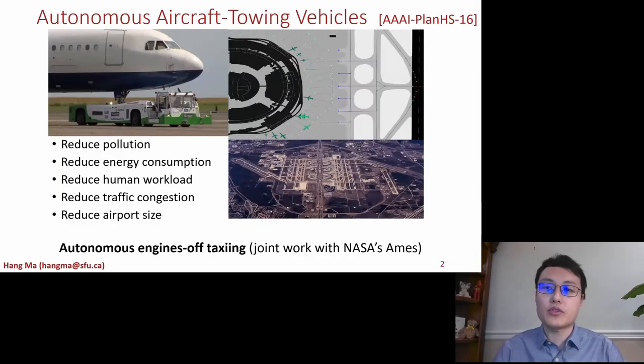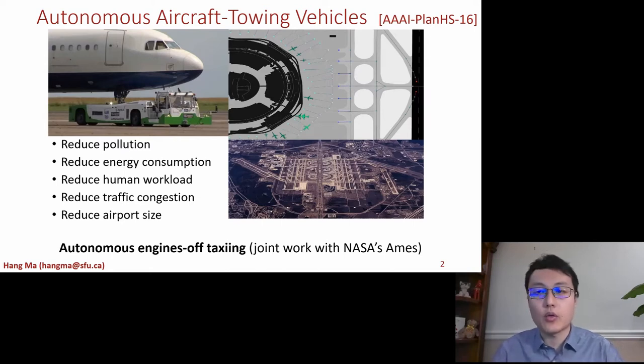So let's first look at our recent Blue Sky project jointly with NASA's aims where we are looking at deploying hundreds of autonomous aircraft towing vehicles in the near future at the Dallas-Fort Worth airport. Here, after an airplane has landed on the runway, we need to assign the airplane to an autonomous vehicle to tow the airplane all the way from its runway to its assigned terminal gate and vice versa from the gate to the runways for takeoff, so as to reduce the pollution produced by the airplane engine and energy consumption, human workload, traffic congestion on the airport surface, and eventually to reduce the size of the airport while still keeping the same throughput.